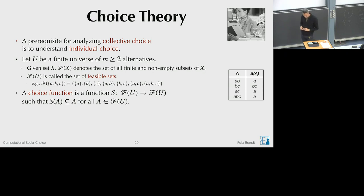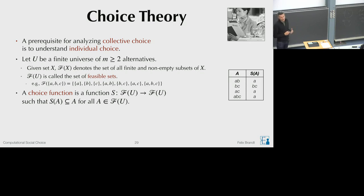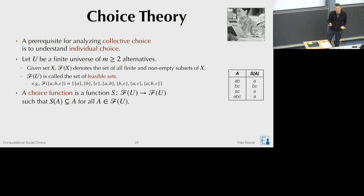Here's an example with universe A, B, C. On the left we have the feasible sets, and on the right the choice sets — the sets of alternatives chosen from each feasible set. I omitted the singletons because they are trivial: we always have to choose the singleton alternative itself. So the only interesting choices happen from sets containing at least two elements.